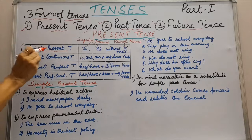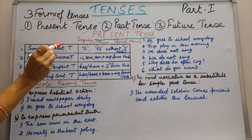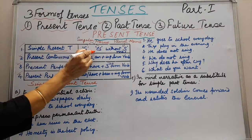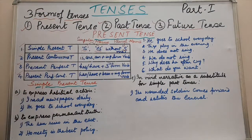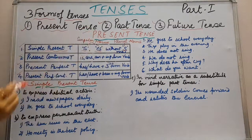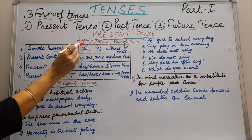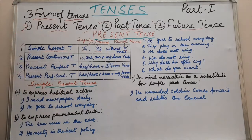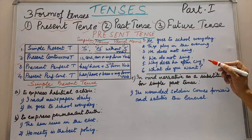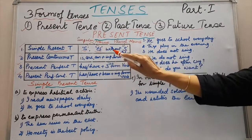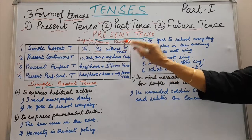Now while using simple present tense, we see that the verbs used in such sentences are with s, es, or without s. So verbs are either used with s, es, or without s. Now s and es verbs are used with singular nouns, and without s verbs are used with plural nouns. Remember, the verbs with s and es are used with singular nouns, and verbs without s are used with plural nouns.